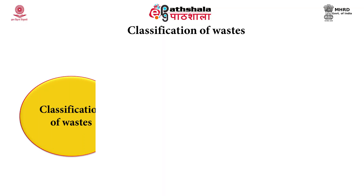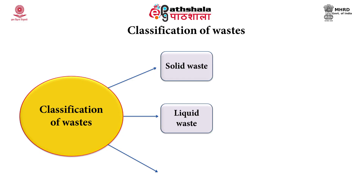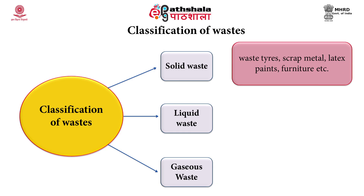Now let us look into the classification of waste. Based on the physical state of a material, wastes are classified into three types: solid waste, liquid waste, and gaseous waste. Solid waste can be in the form of a solid or semi-solid. Examples include waste tires, scrap material, latex paints, and furniture.